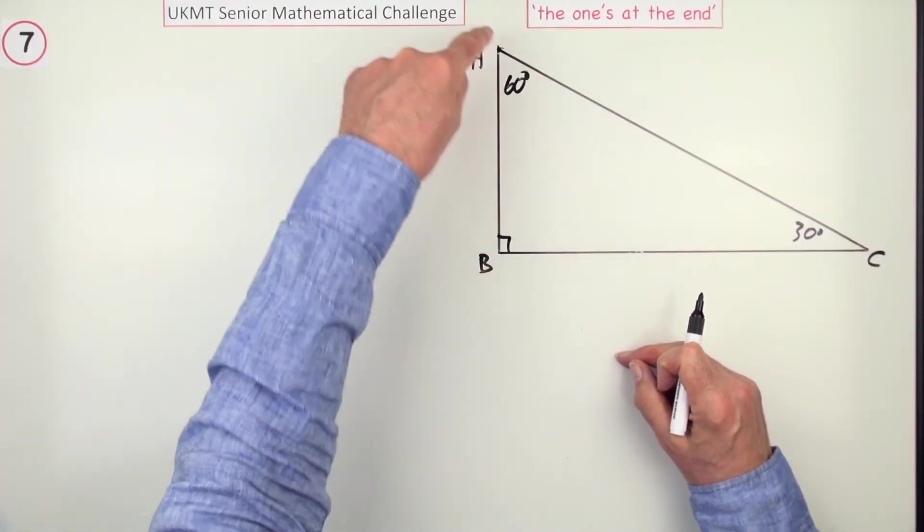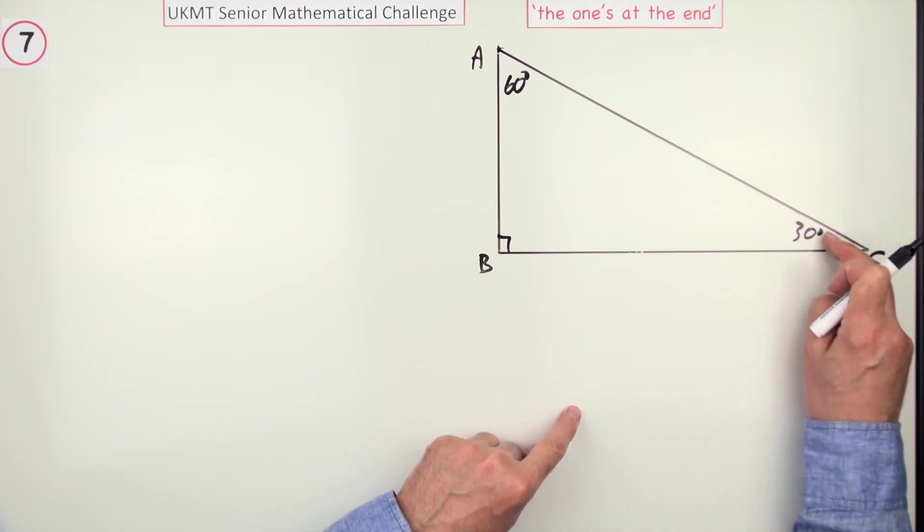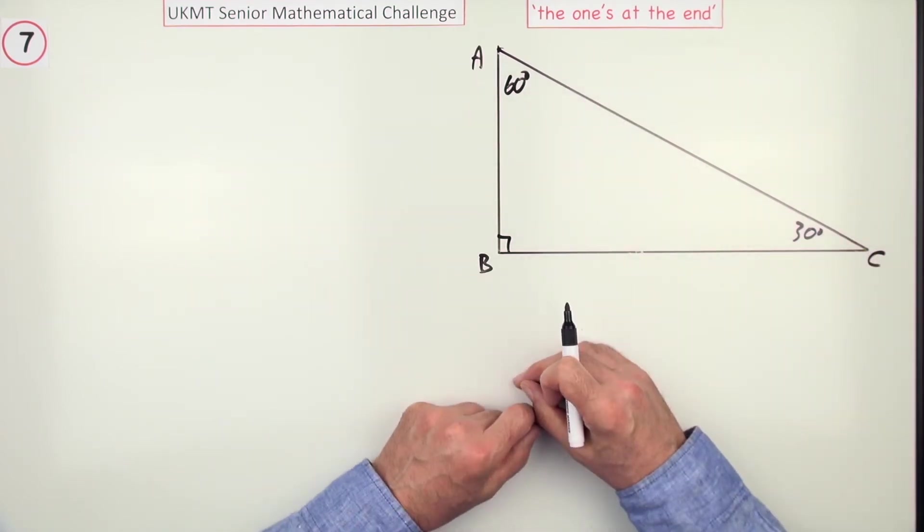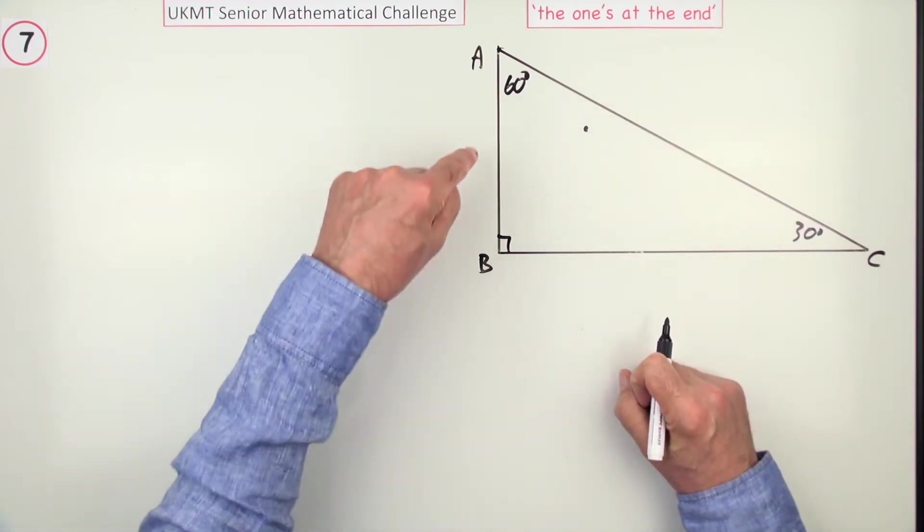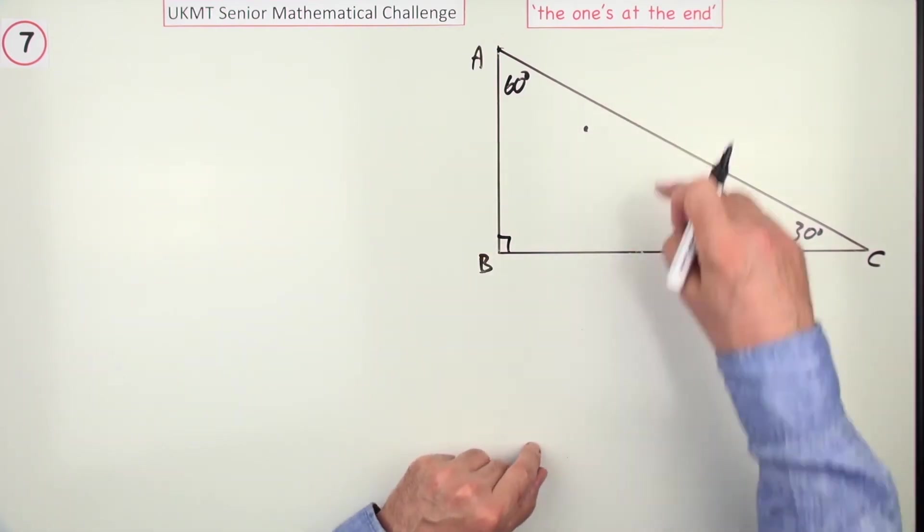In this one, you were given this right-angled triangle ABC with an angle of 30 degrees at C, so an angle of 60-90, and it said, if you picked a point at random within this triangle, what's the probability it's closer to AB than it is to AC?